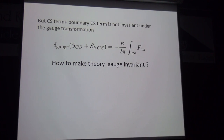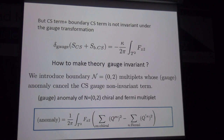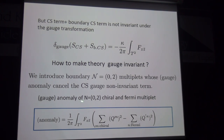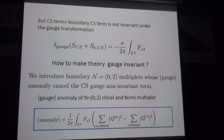To restore gauge invariance, we use anomaly inflow: we introduce a boundary (0,2) Fermi multiplet whose gauge anomaly cancels the gauge non-invariance of the Chern-Simons term. The gauge anomaly of a (0,2) chiral multiplet and Fermi multiplet have specific coefficients involving gauge charges Q_M for the chiral multiplet and Q' for the Fermi multiplet. When the anomaly cancellation condition is satisfied, with the appropriate coefficient κ equaling the required value, the theory becomes gauge-invariant and well-defined.